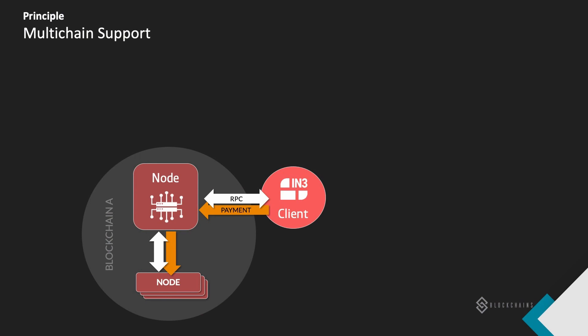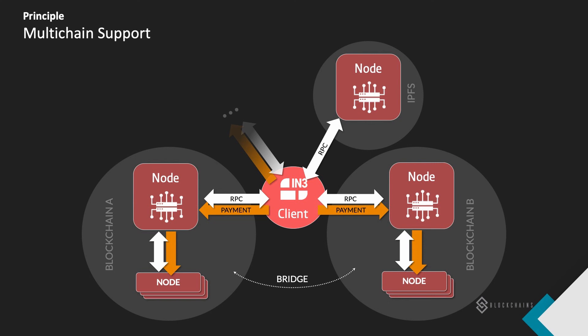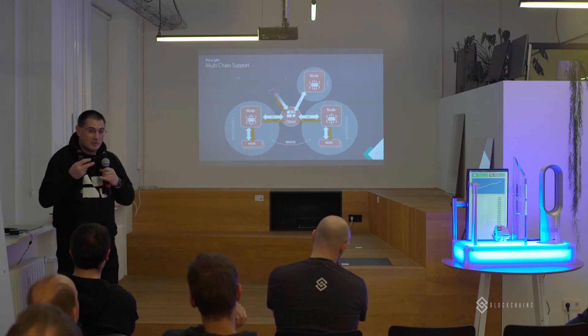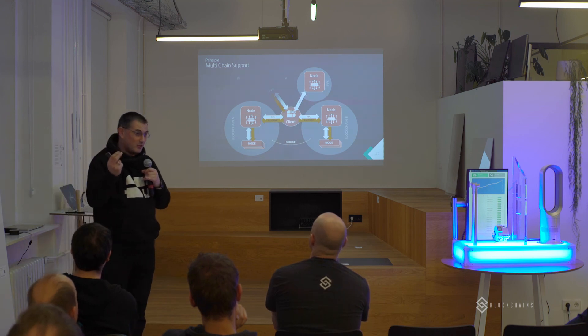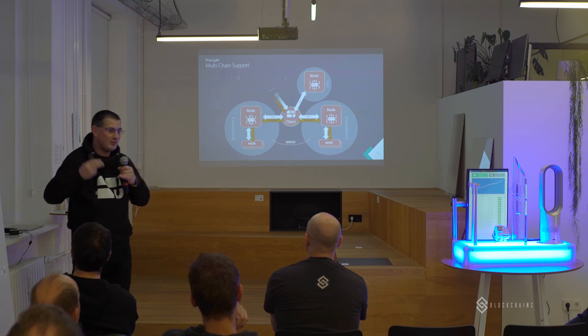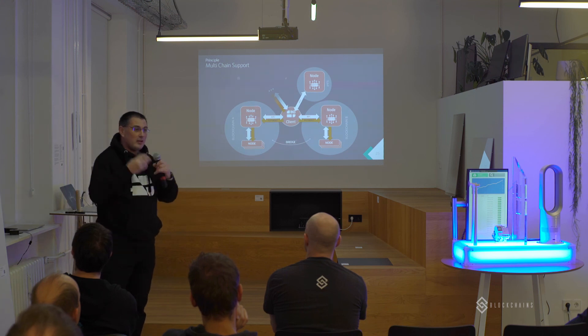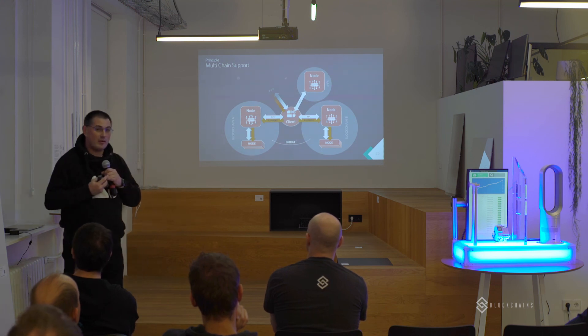Our client is not dependent on one chain — it can connect to nodes of blockchain A, maybe public Ethereum, but at the same time it can also talk to other blockchains. At the moment we support all Ethereum protocol-based blockchains, but other blockchains are in development. We are working on an implementation for Bitcoin and also other data services like IPFS, which is already implemented. Other data services can also be included in the protocol. The benefit is you can run one client on your device, mobile app, or web page which can connect to all chains you need now or in the future, without needing to synchronize all information from those chains.